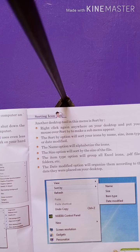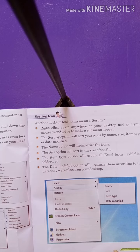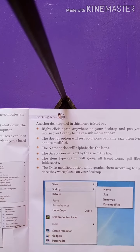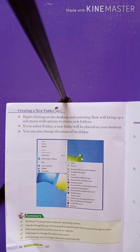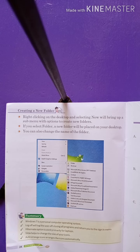और ये सारी PDF files और Excel sheets को भी alphabetically arrange कर देगा। The Date Modified option will organize icons according to the date they were placed on the desktop। और data के according भी ये setup कर सकता है। Creating a new folder — right-clicking on the desktop and selecting New will bring up a submenu with an option to create a new folder। अगर आप right click करेंगे तो एक नया folder create करने के लिए भी option आएगा।